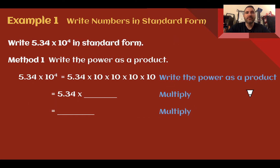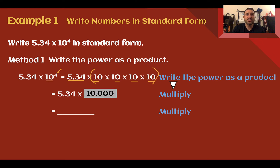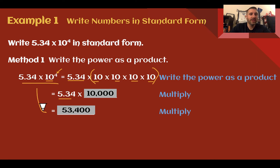Example 1: write numbers in standard form. Write 5.34 times 10 to the 4th power in standard form. There are going to be two methods for this. Method 1: write the power as a product. 5.34 times 10 to the 4th means that factor times 10 multiplied together 4 times. 10 multiplied together 4 times is 10,000, so this is the same as 5.34 times 10,000. Multiplying gives us 53,400.